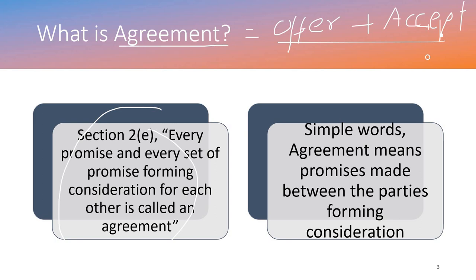Section 2, subsection E defines agreement. As shown in the equation at the top of the slide: Agreement = Offer + Acceptance. The technical legal definition says every promise and every set of promises forming consideration for each other is called an agreement.